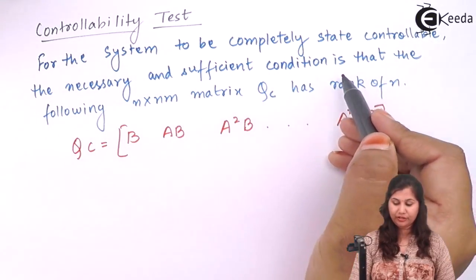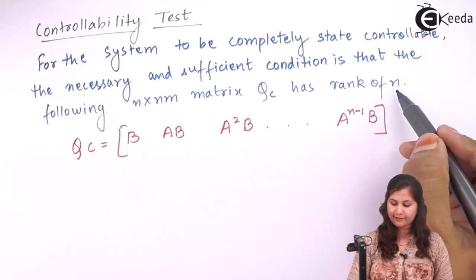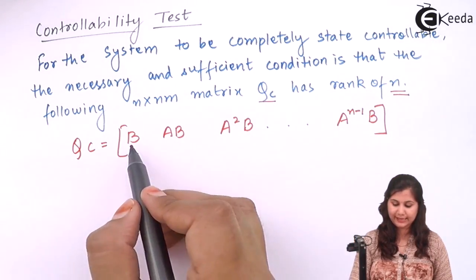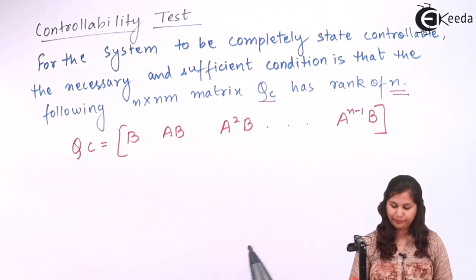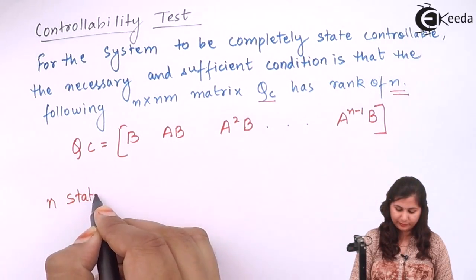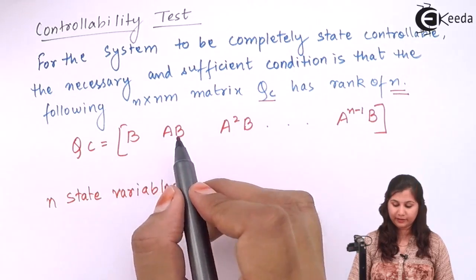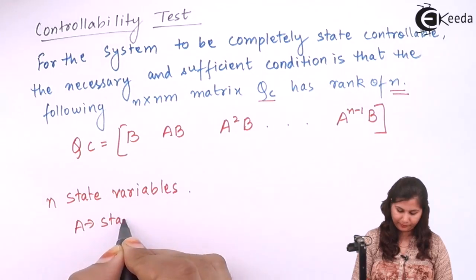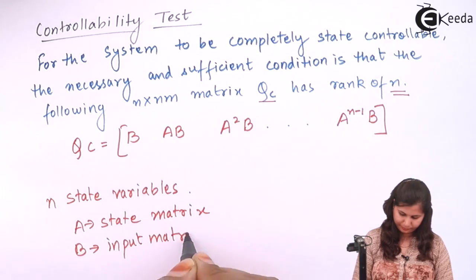The controllability test: a system is said to be completely state controllable if the necessary and sufficient condition is that the N×NM matrix QC has rank N. This matrix QC is defined as [B, AB, A²B, ..., Aᴺ⁻¹B], where N is the number of state variables, A is the state matrix, and B is the input matrix.